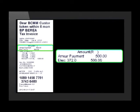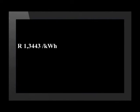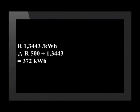Let's look at how this was calculated. R1.3443 is the cost of 1 kWh of electricity. Therefore, R500 divided by R1.3443 equals 372 kWh. The tariff you are charged depends on which municipality you live in. Households with a joint income below a certain amount can apply for a reduction in costs for the first 50 units of electricity. These are known as indigent consumers, and an indigent consumer will also get the first 6 kL of water for free.